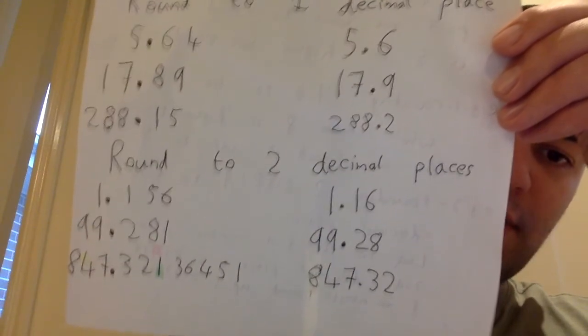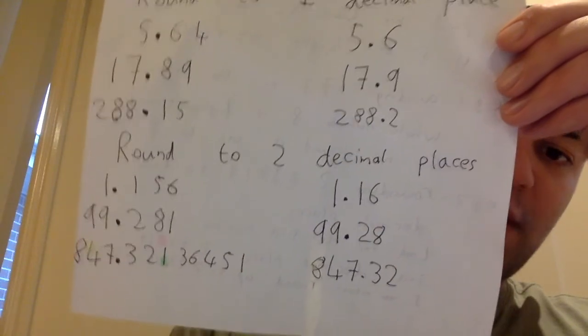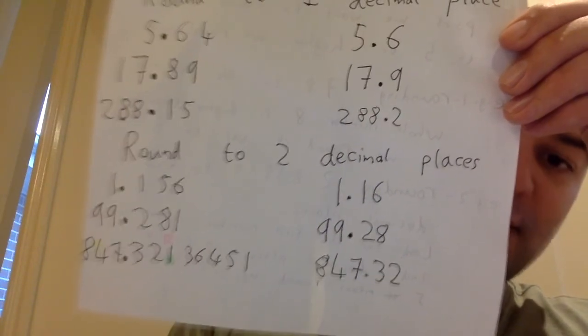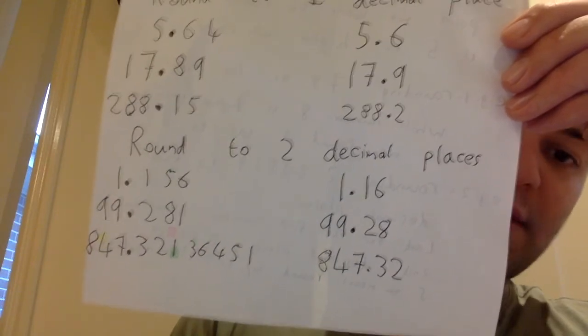The next one, 99.281. So the number after the second decimal place is a 1, so we round it down, keep it as 99.28.